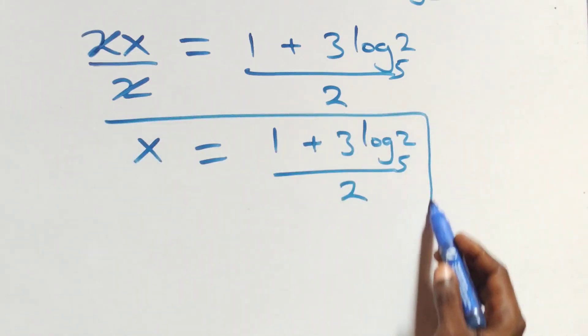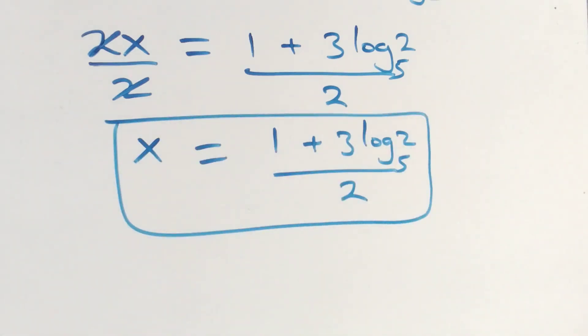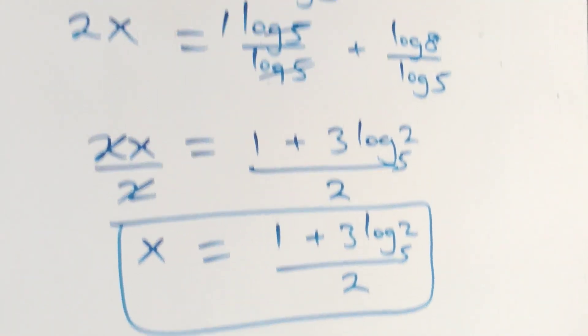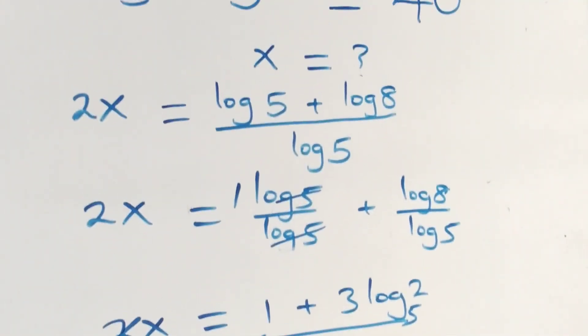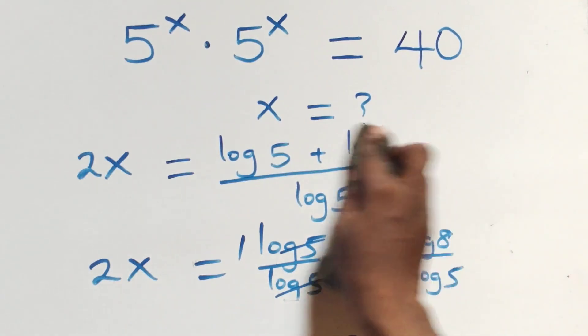So here we have the value of x in this problem as x equals (1 plus 3·log₅2) all over 2. Now let's check if this satisfies the original problem.